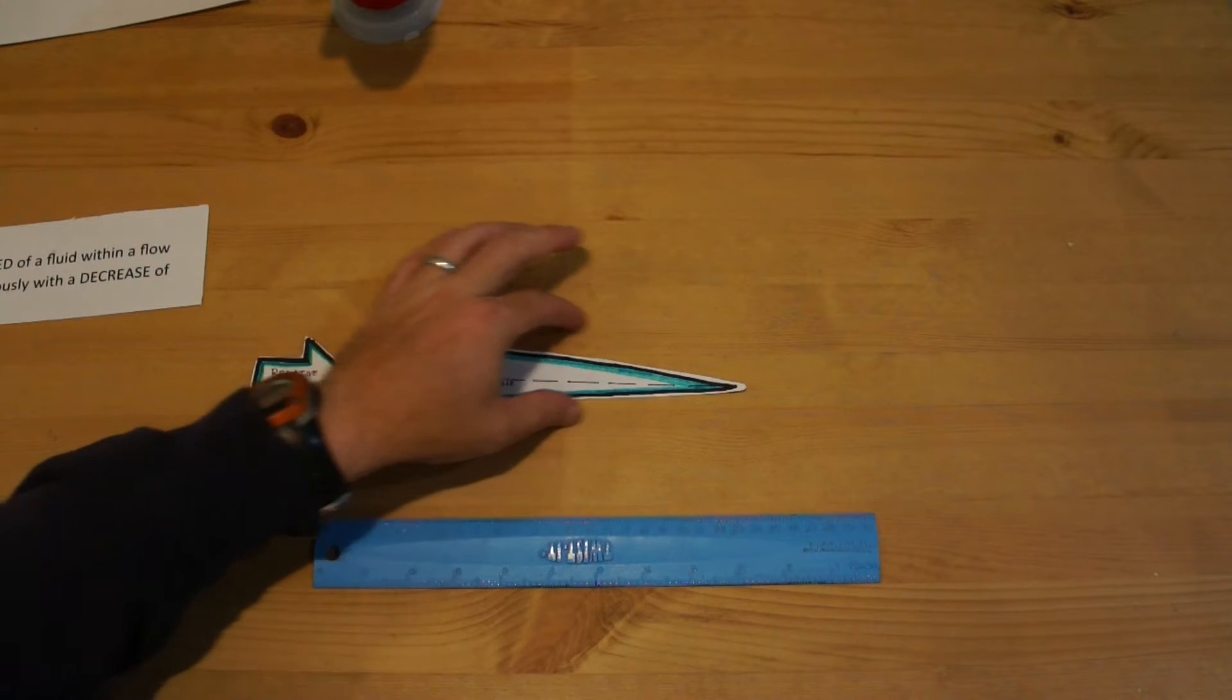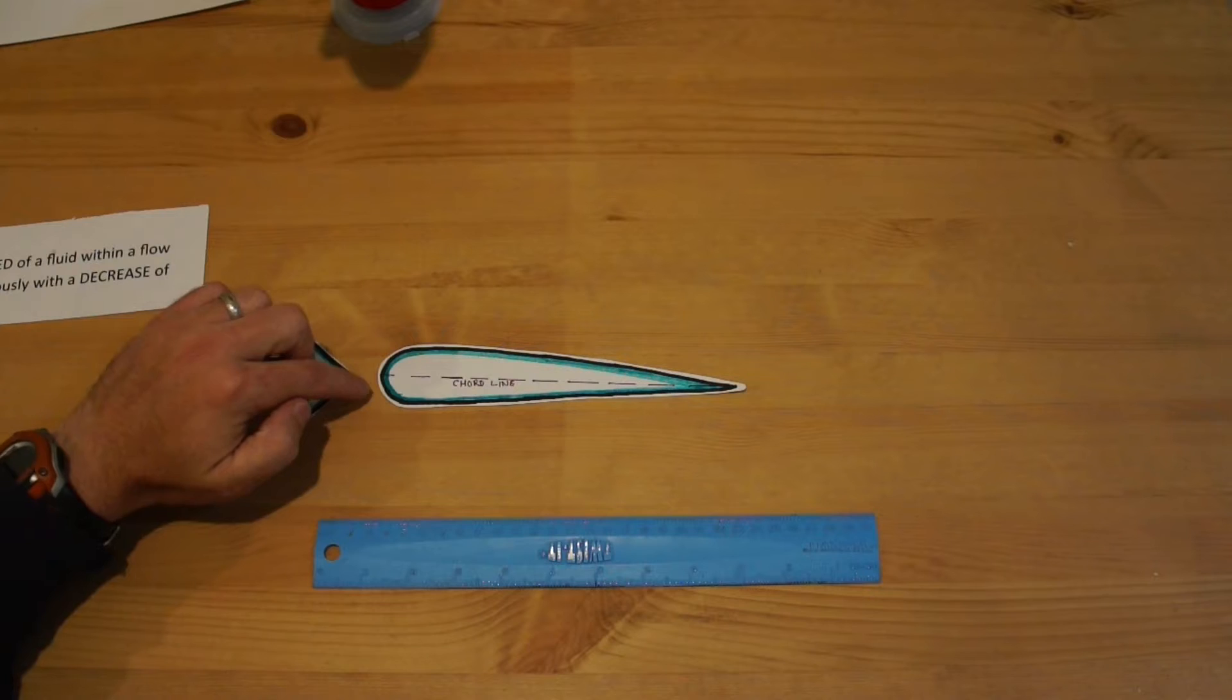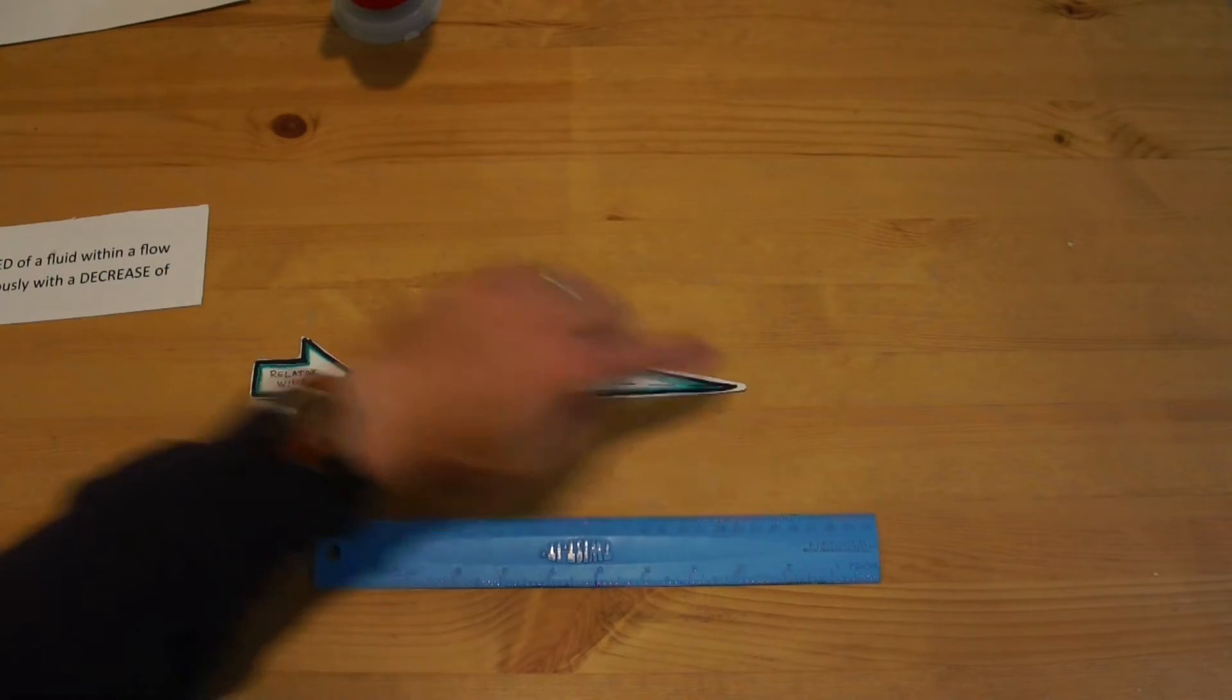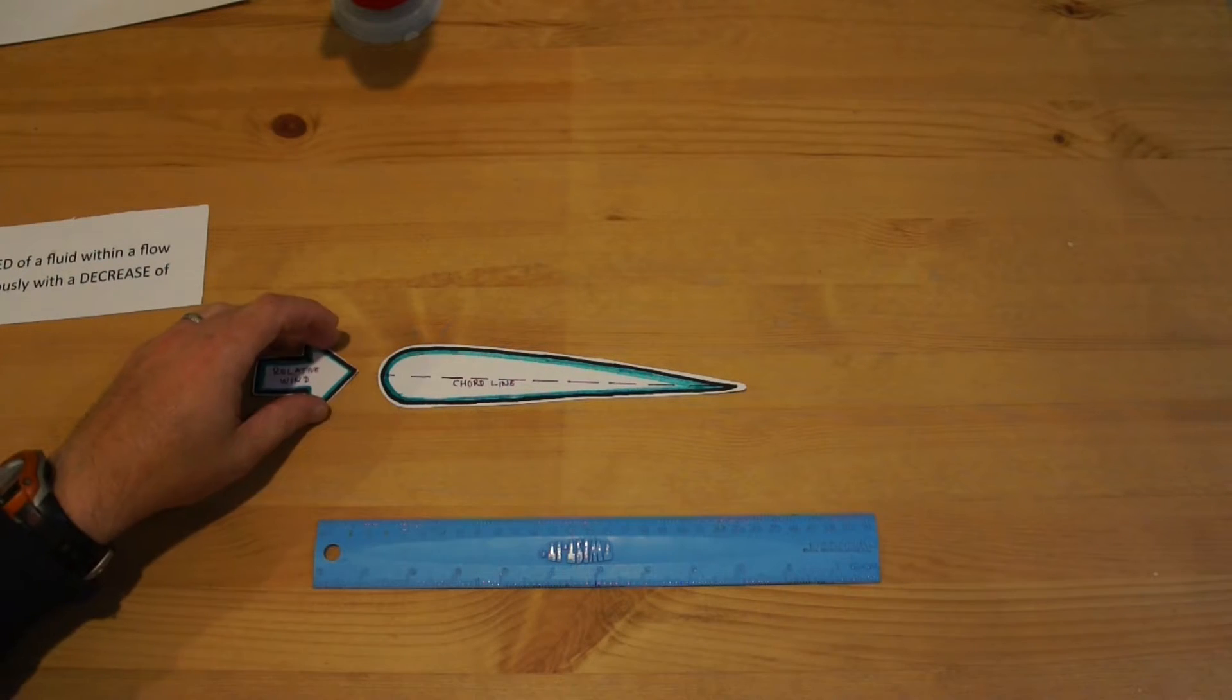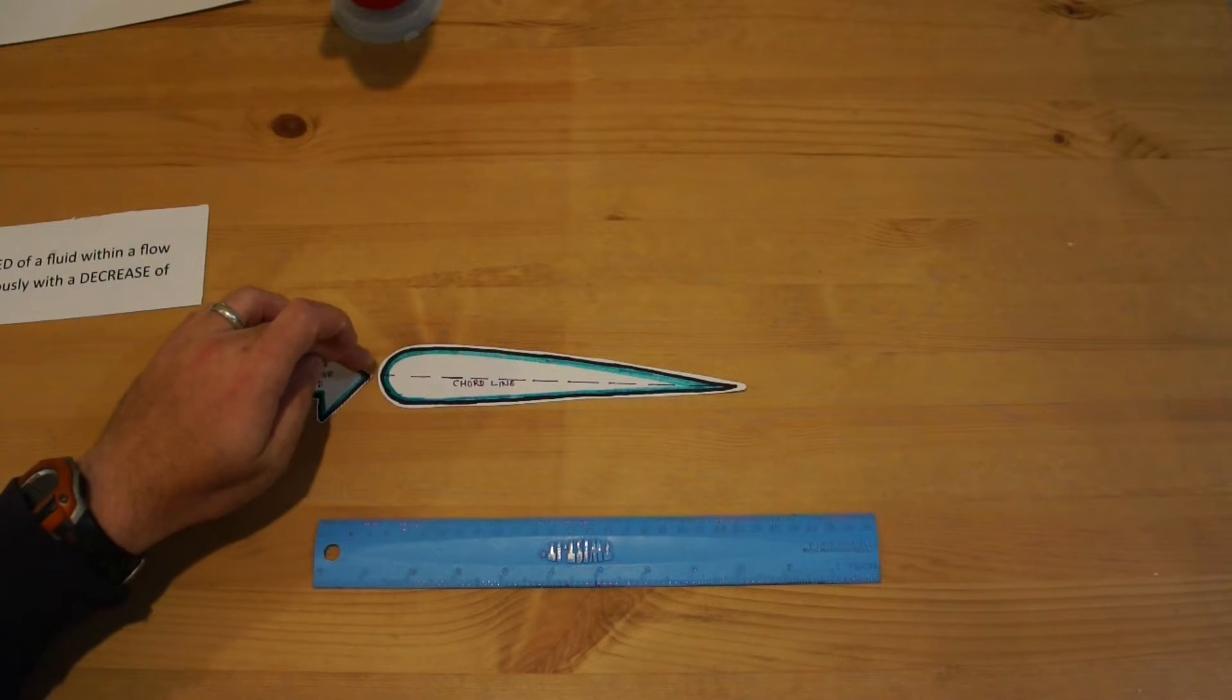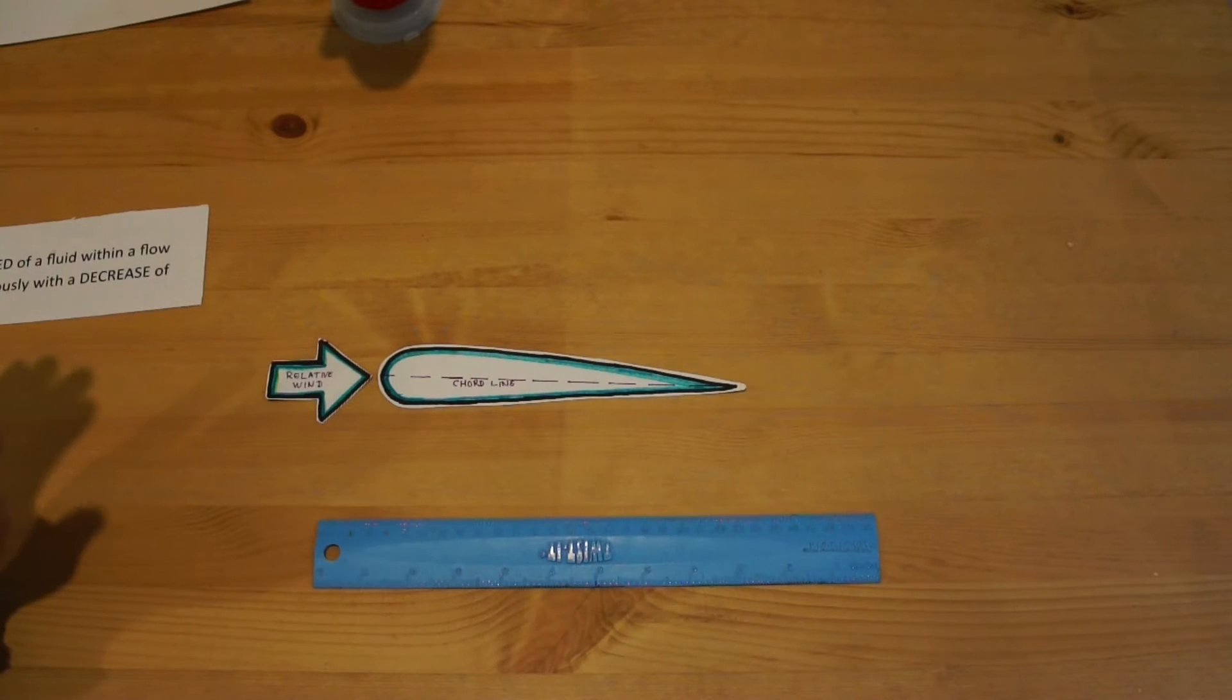Let's take our cross-section of our wing here. If we have wind flowing over the top of our wing, it's going to hit the leading edge of the wing and then the wind is going to kind of go around the wing. You'll notice that at the top of our wing, at the top of our airfoil, the distance from here to here is longer than the distance from here to here.